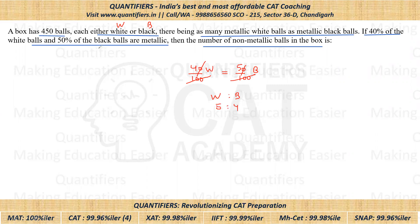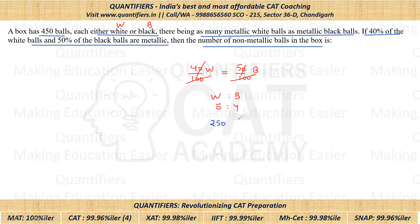Now we know the total number of balls, which are 450. If we divide 450 in the ratio of 5 is to 4, white balls come out to be 250 and black balls will be equal to 200.